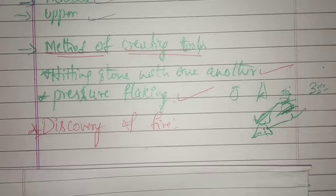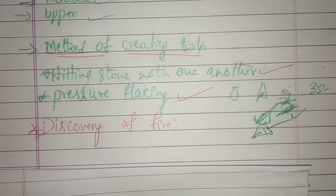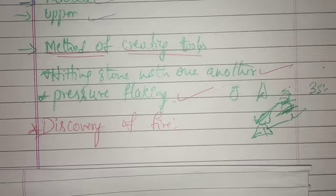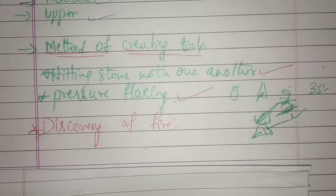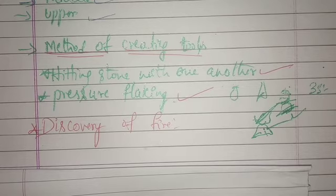To summarize pressure flaking: they kept the first stone at a certain angle, placed a second stone below it, and in order to give shape to the first stone, they hit the second stone with the help of a third stone. By applying pressure to the second stone, you get the shape on the first stone. This is pressure flaking.